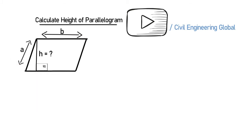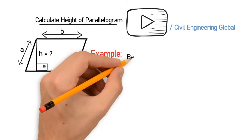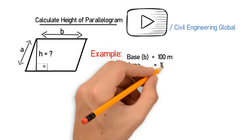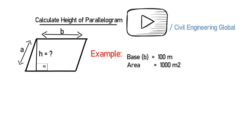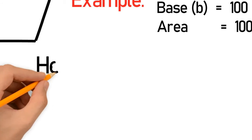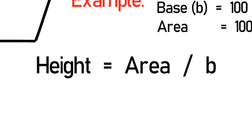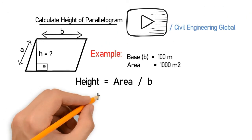In this example, let's consider the base B is equal to 100 meters. We will take the area equal to 1000 square meters. To find the height, we have the formula: height is equal to area divided by base, so H is equal to 1000 divided by base.